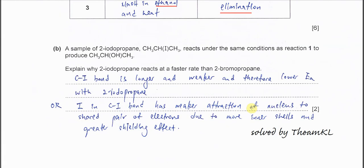Part B. A sample of 2-iodopropane reacts under the same conditions as reaction 1 to produce the same alcohol. Explain why 2-iodopropane reacts faster than 2-bromopropane. For this one, you have to relate to the size of the halogen.